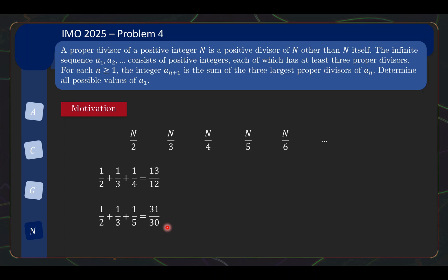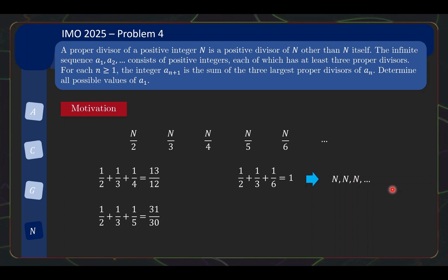Let's do one more because you will notice something interesting. If 2, 3, and 6 are divisors but 4 and 5 are not, then the next term will actually be n itself. So this already suggests something: if n is an integer with such a property — namely that 4 and 5 don't divide it but 2, 3, and 6 do — then you will have a sequence that works because you just get n, n, n, n, and so on.